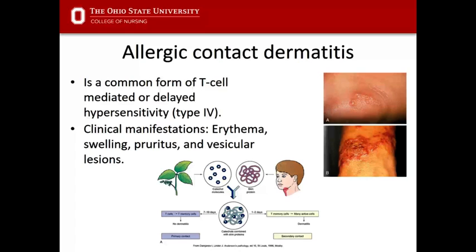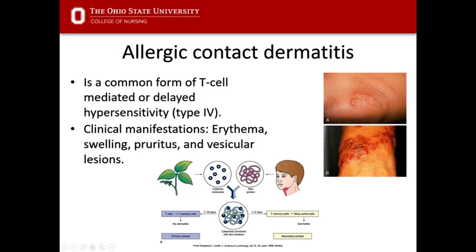Allergic contact dermatitis — technically when we say 'allergic' we're referring to type 1 hypersensitivity, but allergic contact dermatitis is actually a form of T-cell mediated hypersensitivity, which is type 4, because it's a delayed-type response. What happens is the allergen — here, poison ivy — comes into contact with the skin and binds with a carrier protein, forming what is called a sensitizing antigen. Langerhans cells from the skin, essentially skin dendritic cells, will process that antigen and present it to a T-cell.